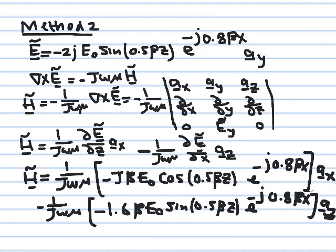Now we apply Method 2: going from the electric field phasor to the magnetic field phasor through the frequency domain Maxwell's equations, then converting back to the time domain. Starting with curl E = −jωB = −jωμH, dividing both sides by −jωμ gives H̃ = −(1/jωμ) curl Ẽ. The electric field phasor has only a y component which is a function of both z and x.